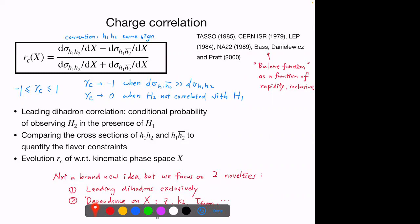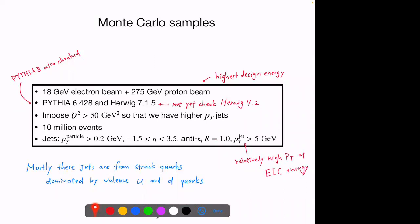The charge correlation idea is not new, but there are two novelties in this work. First, we look at leading and next-leading hadrons. Second, we study R_C as a function of jet substructure observables, which includes the momentum fraction and transverse momentum information. The rest of the study is straightforward: we prepare Monte Carlo samples and look at differences between the two samples. We use the highest design energy for the EIC — an asymmetric 18 GeV electron beam and 275 GeV proton beam.